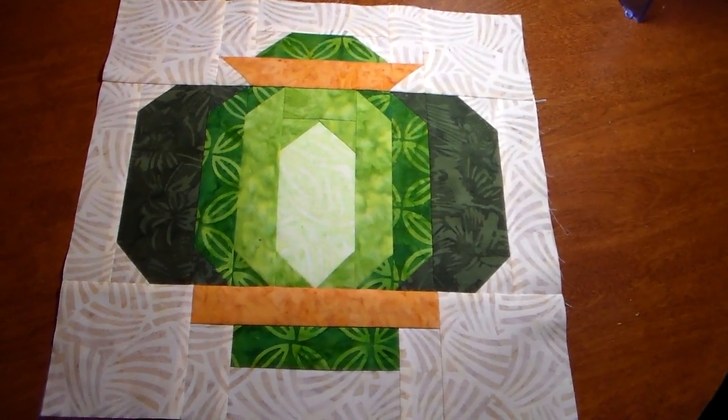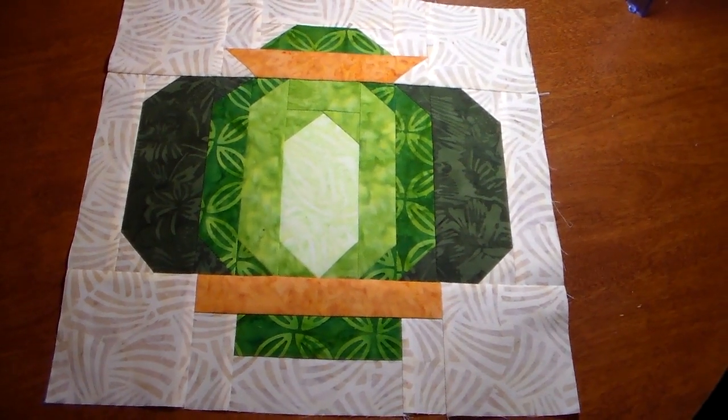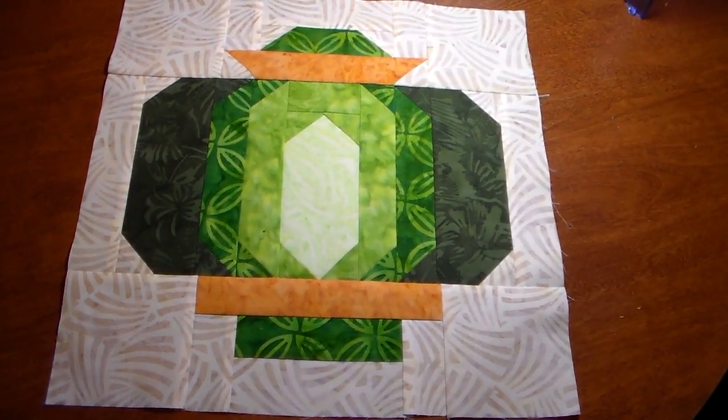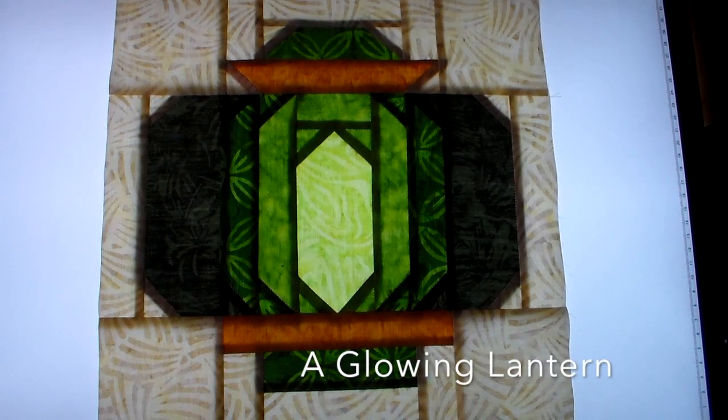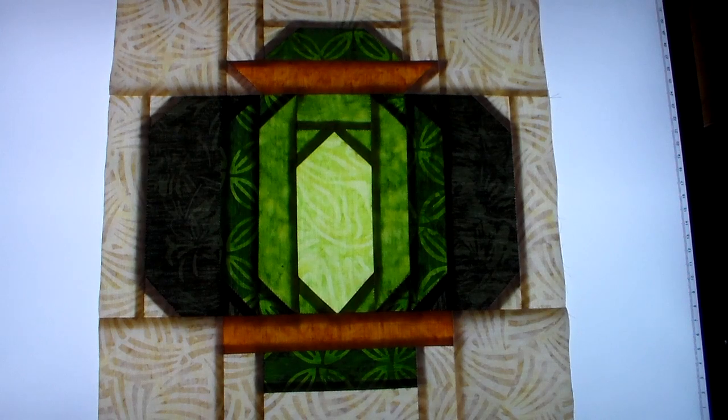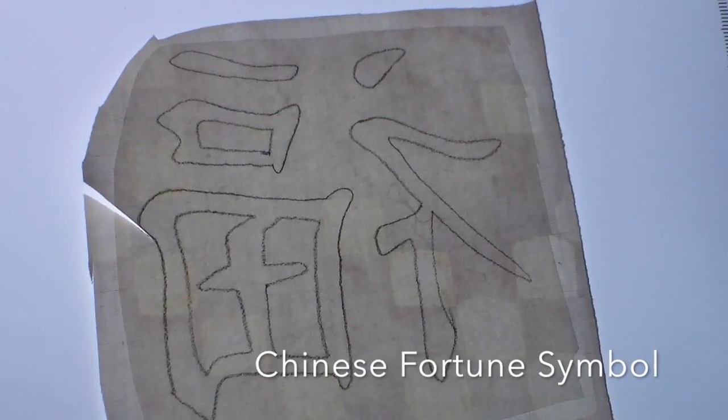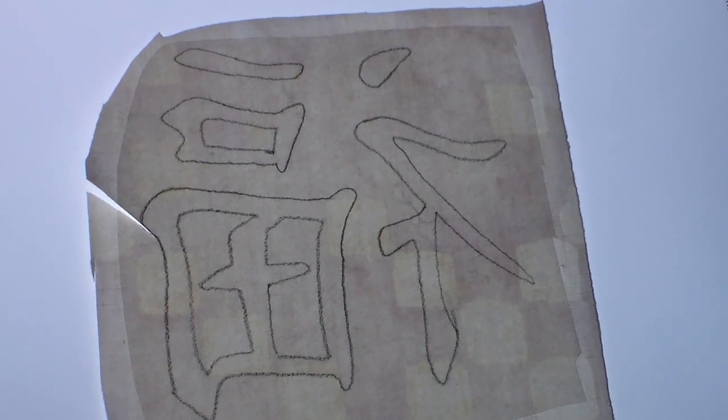This is the completed Chinese lantern fortune without the optional symbol on it which I'm going to do next. Here it is on the light board all lit up. Here I'm showing you that I've traced the Chinese fortune symbol on the fusible interfacing and I put the fusible on the fabric so next I'm going to cut it out.